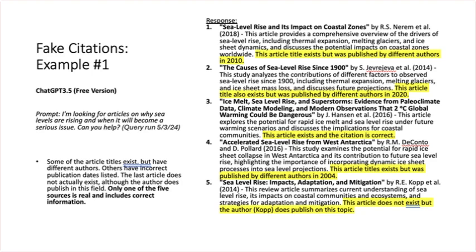Here's an example from a prompt given to ChatGPT 3.5, the free version. You're going to see that some of the article titles exist but have different authors. Others have incorrect publication dates listed, and that last article does not actually exist, although the author does actually publish in this topic and field. So only one of the five sources is real and includes correct information — one in five. That's not a good number.